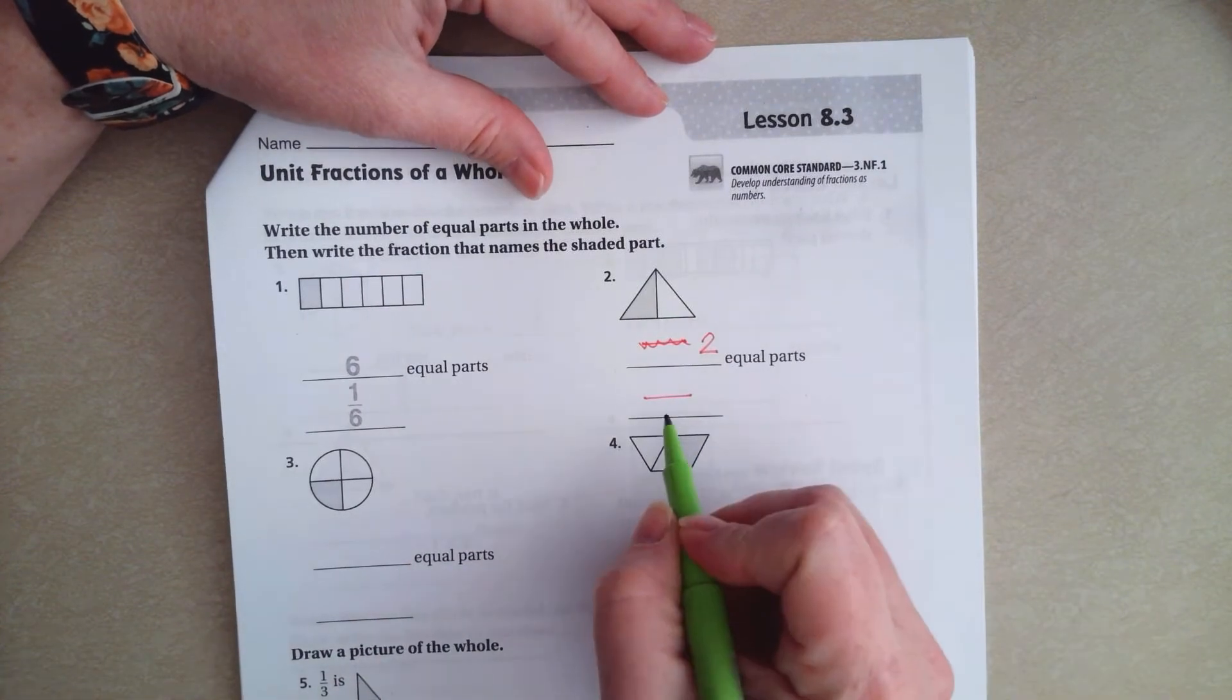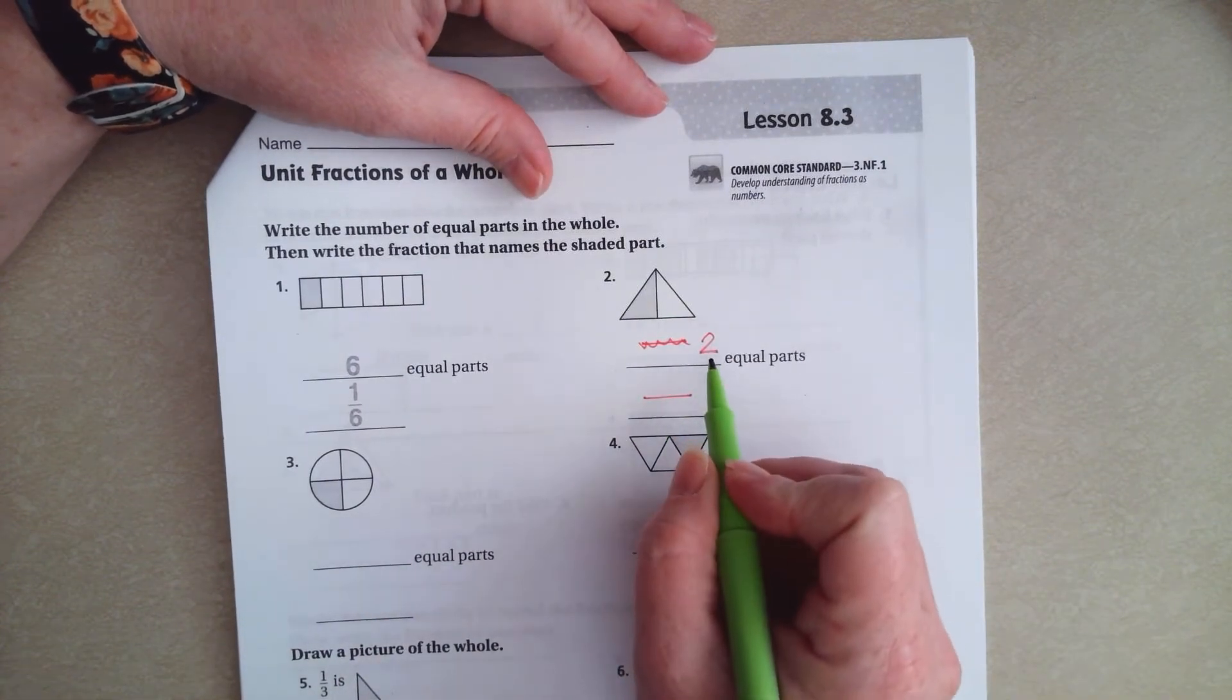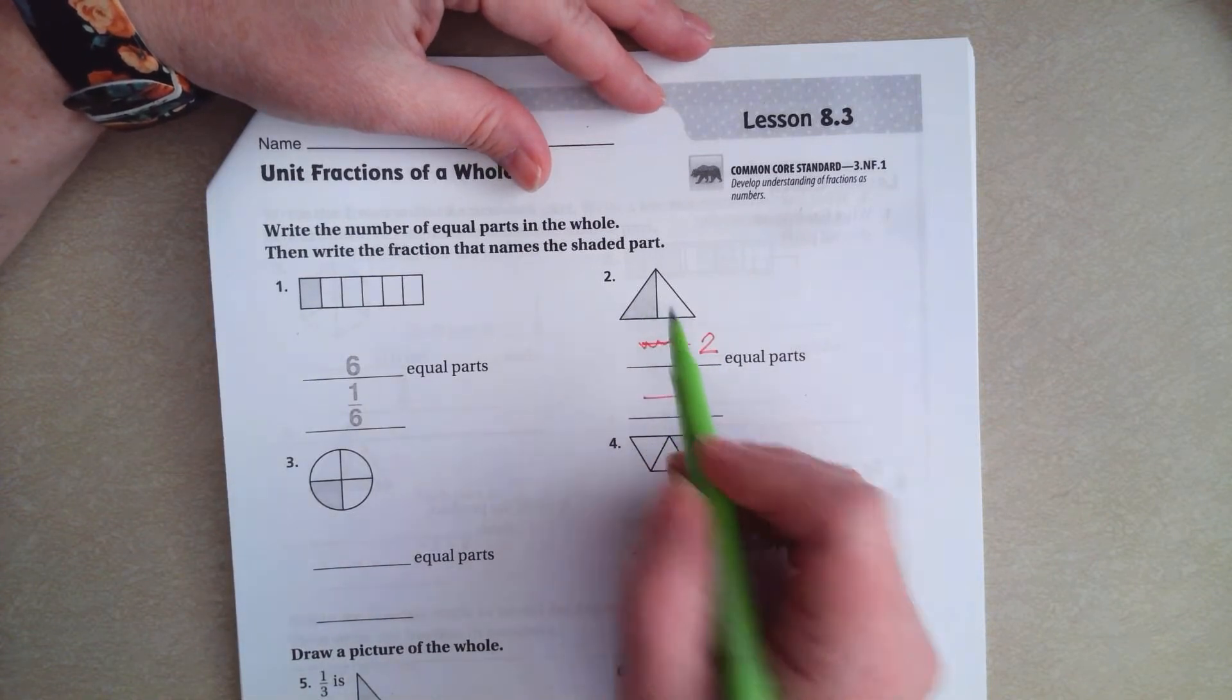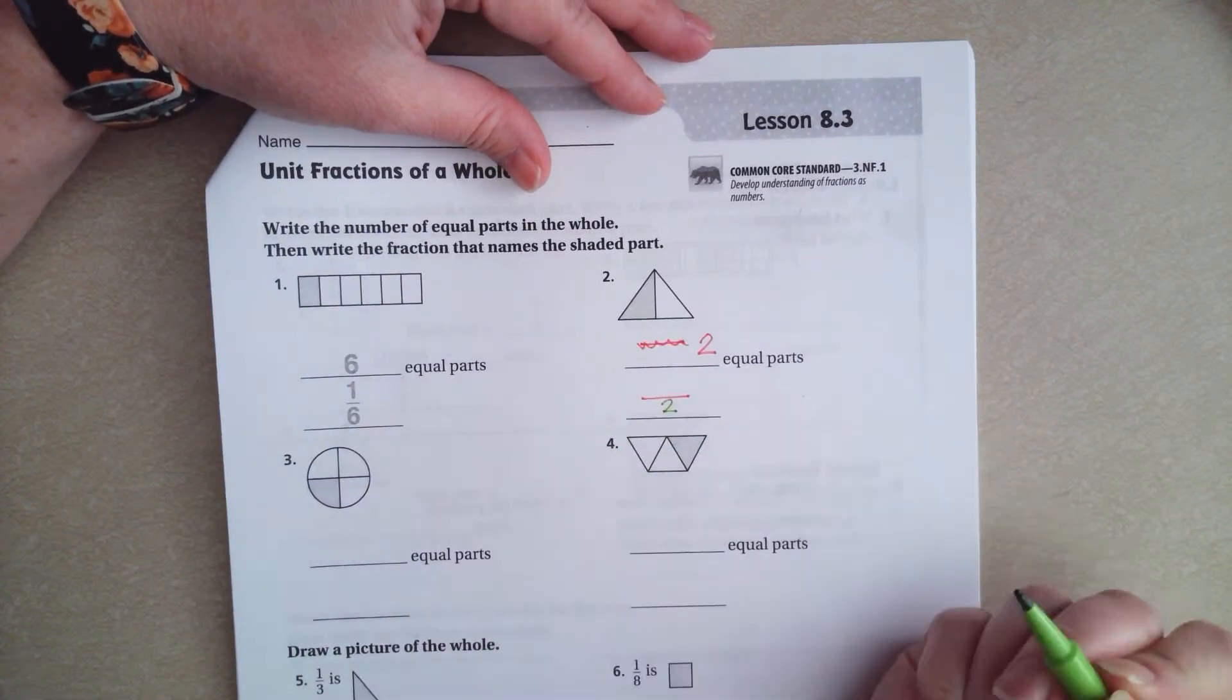Now your fraction, so your bottom number is always going to be how many parts there are. So in this part, there's one, two parts total.